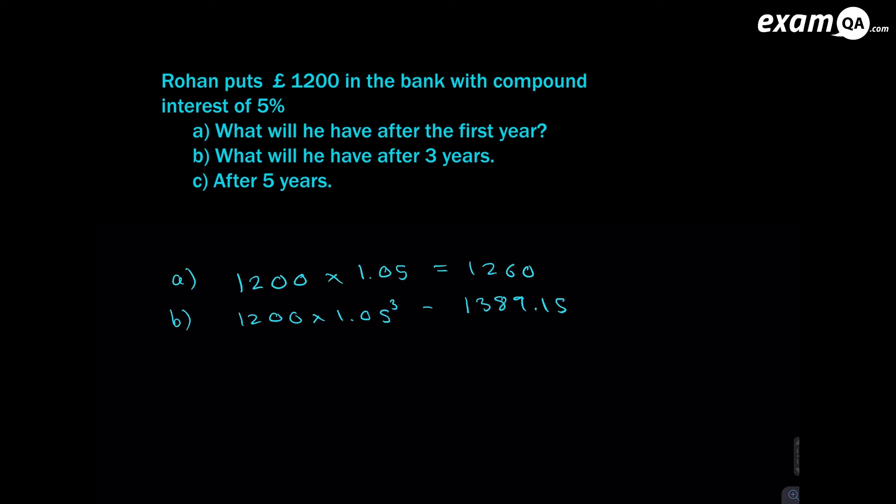Part C wants us to work out how much he'll have after 5 years. So what you do is, again, the 1200 times 1.05. And you do it to the power of how many years? So that's the pattern you should have noticed. When we had 1 year in part A, it was 1.05 to the power of 1, which is just 1.05. And when it's 3 years, we had 1.05 to the power of 3. And this time we're going to have 1.05 to the power of 5.